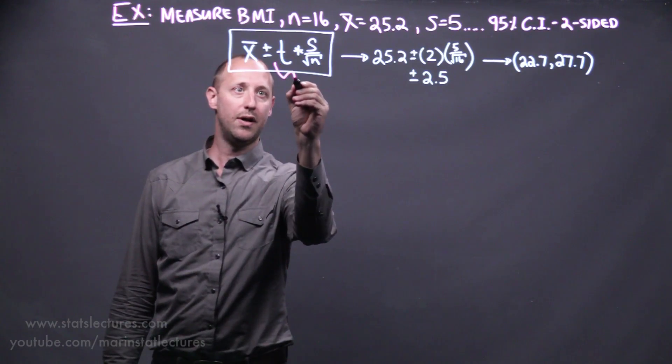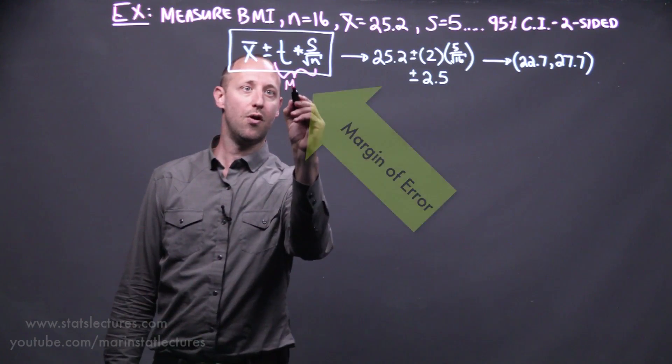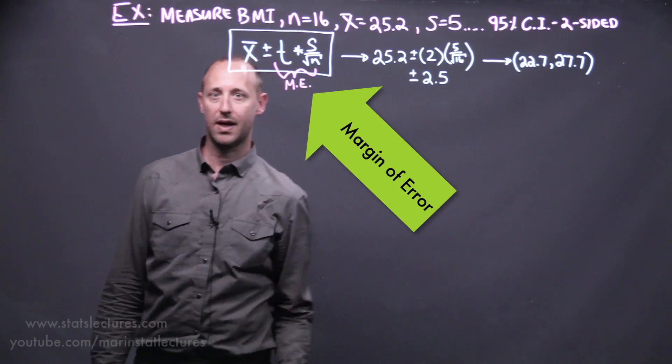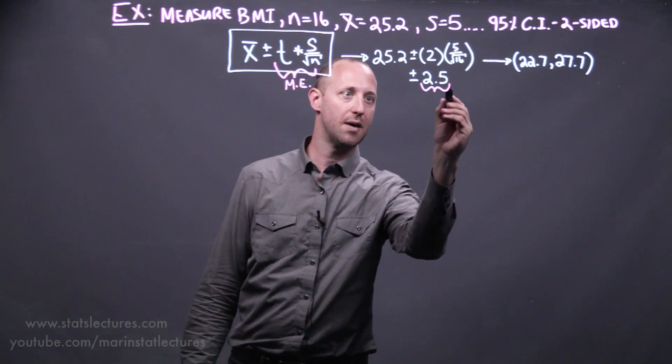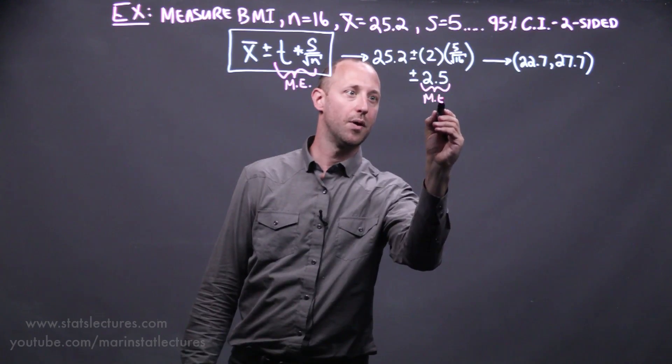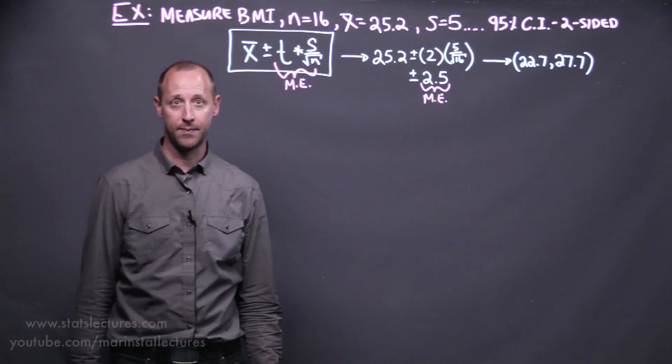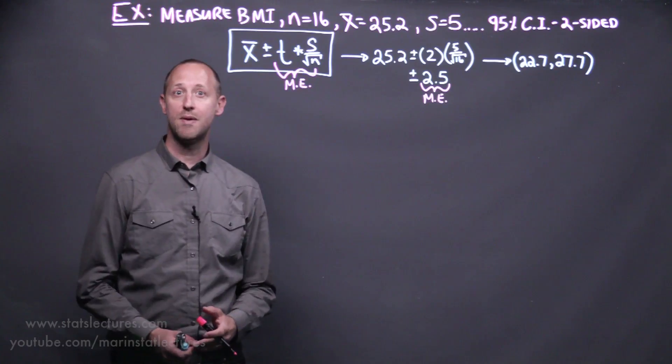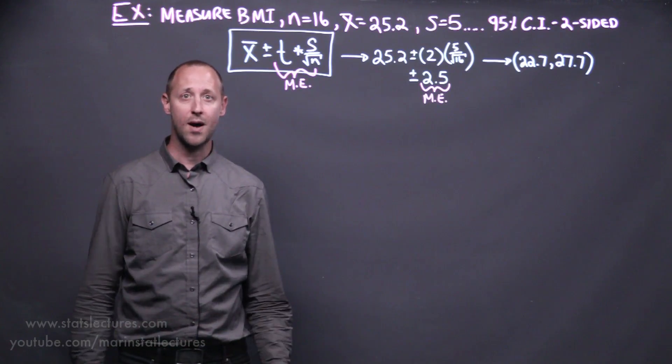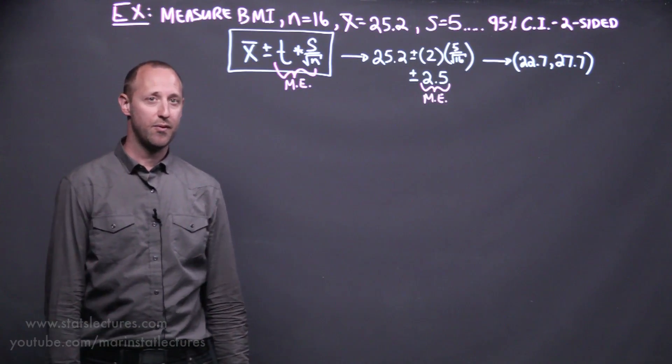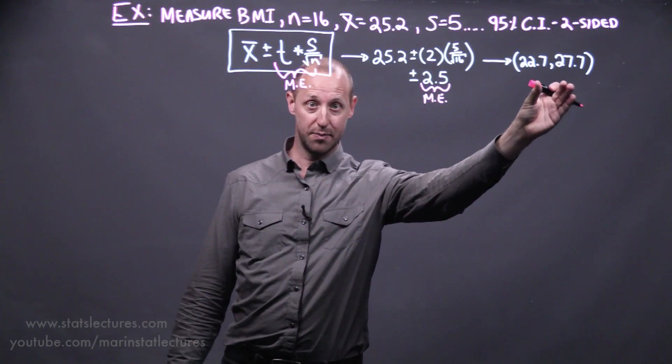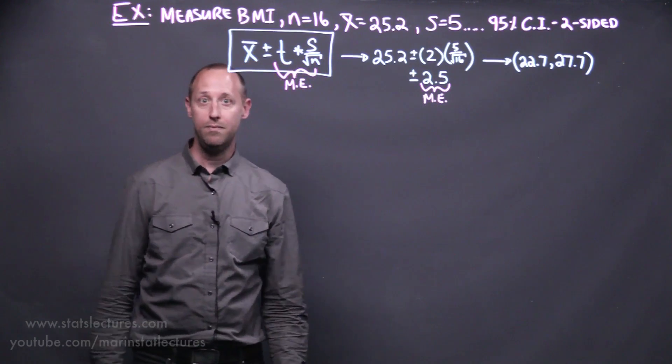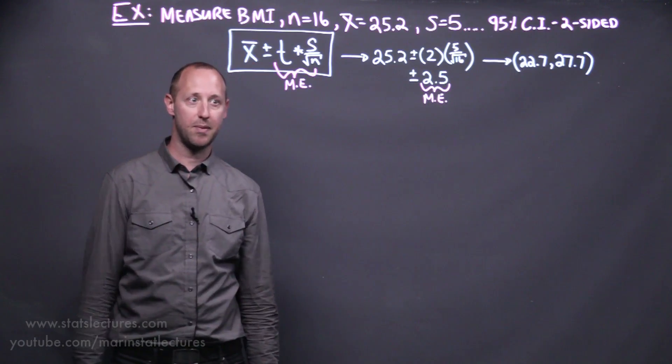So this part here is what we call the margin of error and I'm going to abbreviate it ME. We saw in our particular example the margin of error was 2.5. Now this may be a bit too wide for our liking. So we might prefer to get a margin of error that's smaller or a confidence interval that's a bit narrower and more precise in its estimate of the population's mean.